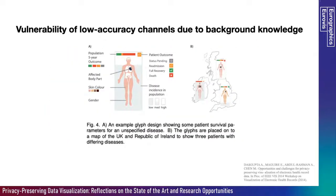We have another example of how vulnerable low accuracy channels are. On the figure on the left-hand side, we have a glyph — a popular representation used in the healthcare domain. In this example, we have the glyph of a patient with information on disease incidence in the population. Combining this knowledge with publicly available datasets, an attacker can easily pinpoint the geographical region where the patient belongs. So this is a vulnerability of low accuracy channels due to background knowledge.